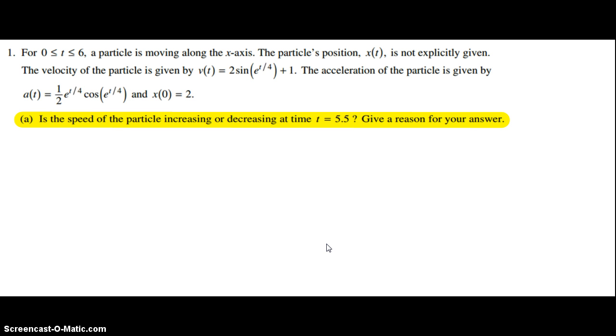Part A: Is the speed of the particle increasing or decreasing at time t = 5.5? Give a reason for your answer. We determine increasing or decreasing based on the signs of v(5.5) and a(5.5). If they're both positive or both negative, it'll be increasing. If they're different signs, then it'll be decreasing.